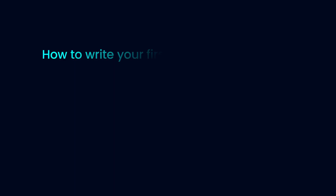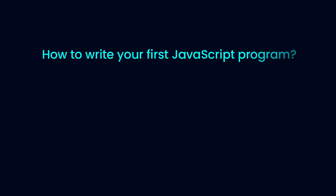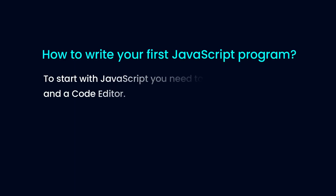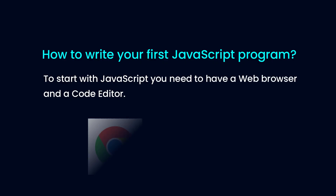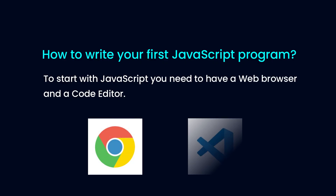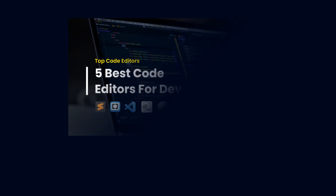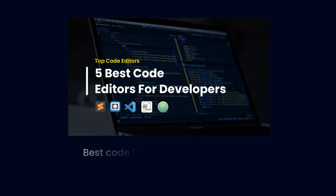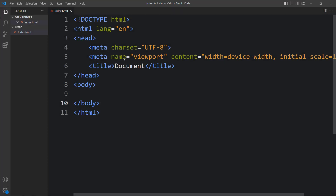How to write your first JavaScript program? To start with JavaScript, you need to have a web browser and a code editor. I am using Google Chrome web browser and Visual Studio Code editor. I already have a tutorial on how to download and install Visual Studio Code editor — you can find the video link in the description.